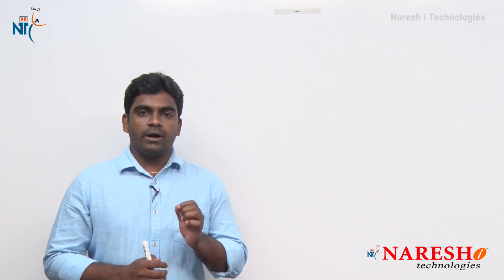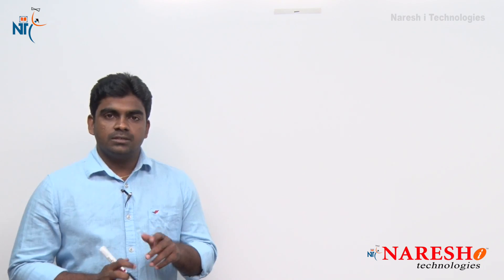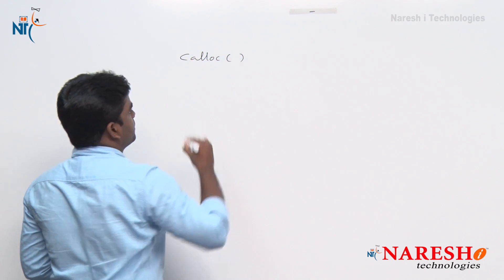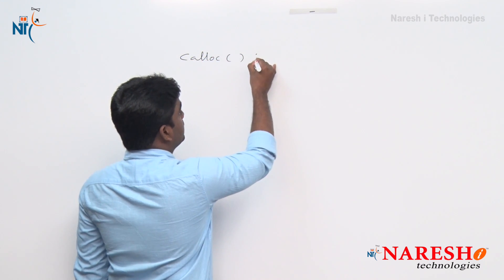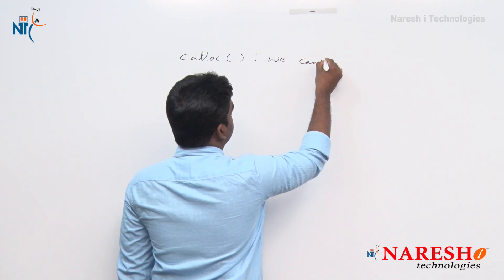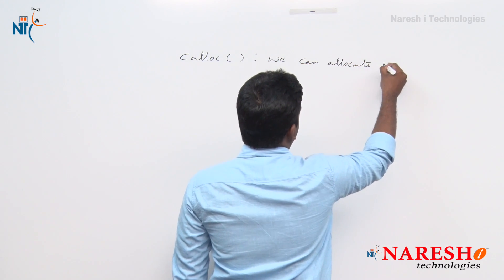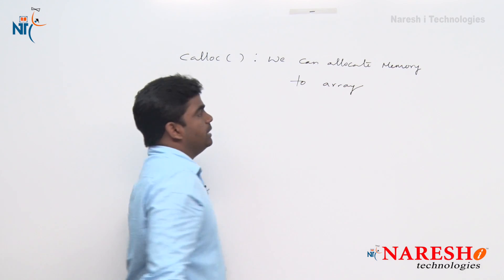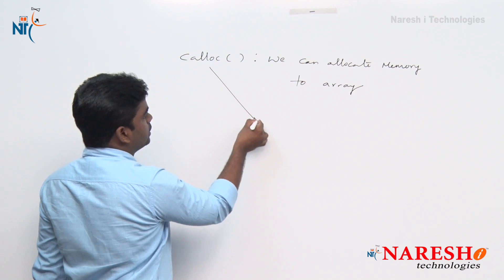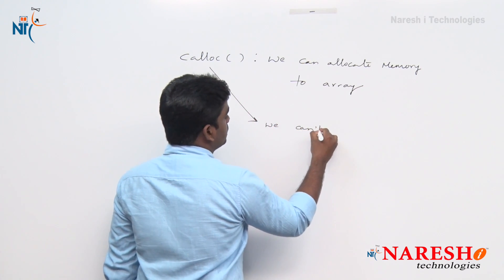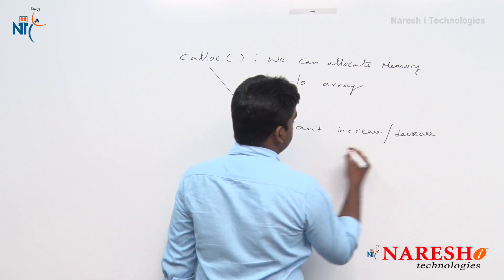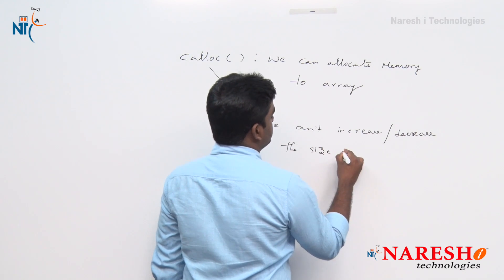In this session we will see what are the drawbacks of calloc and why they introduced the concept of realloc. Using the calloc function we can allocate memory dynamically to arrays. But what is the drawback? We cannot increase and decrease the size of the array.